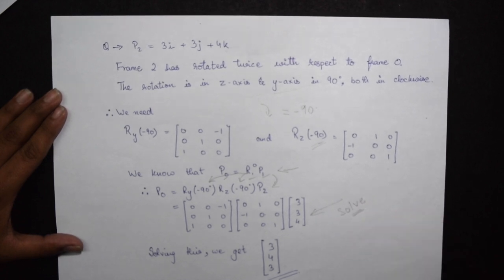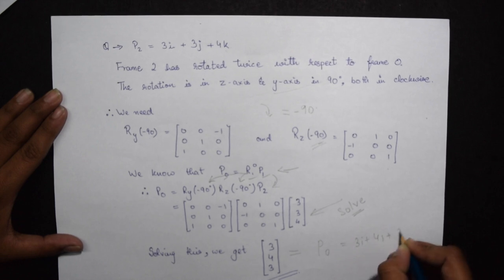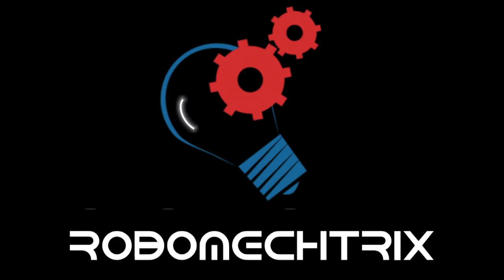So our initial frame was 3i plus 4j plus 3k. I hope you have understood this. If you have any doubts, please contact us. I hope you liked it. Thank you, Robomatrix.